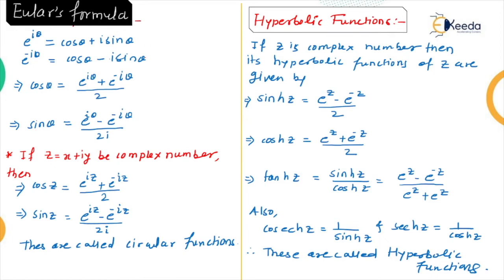Similarly, sin θ can be derived by adding or subtracting equation 1 and equation 2. Adding gives us cos θ, and taking equation 1 minus equation 2 gives us sin θ.